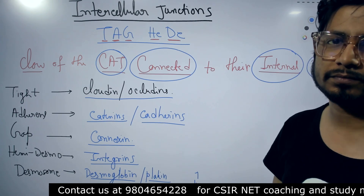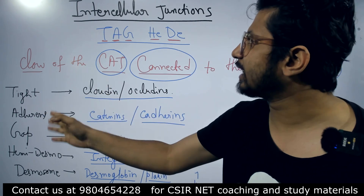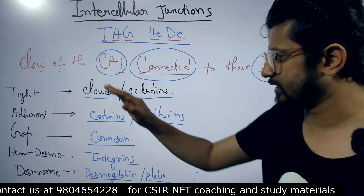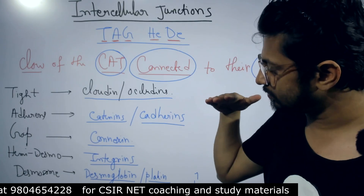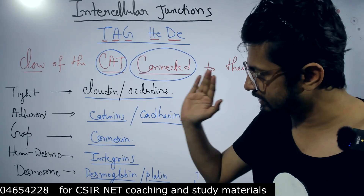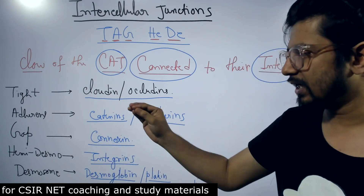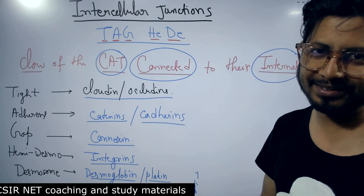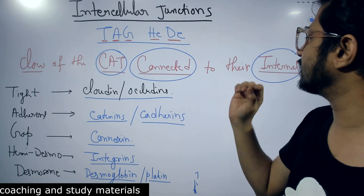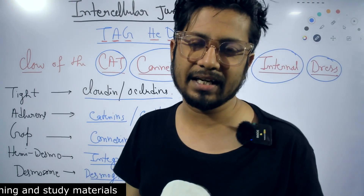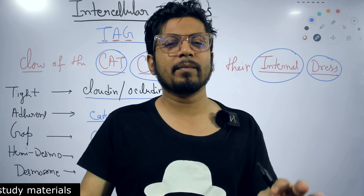So to summarize: tight junctions use claudin and occludin; adherence junctions use catenins and cadherins; gap junctions use connexins; hemi-desmosomes use integrins; and desmosomes use desmoglein, desmoplakin, and desmocollin. With the mnemonic 'claw of the CAT connected to their internal dress,' you can remember all the protein names involved in intercellular junctions.